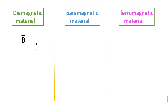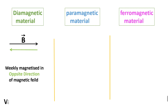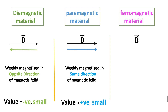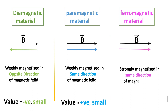In a magnetic field, diamagnetic materials are weakly magnetized in the opposite direction of the field, and its susceptibility value is negative and small. Paramagnetic materials are weakly magnetized in the same direction of the field, and its value is positive and small. While ferromagnetic materials are strongly magnetized in the same direction of the magnetic field.